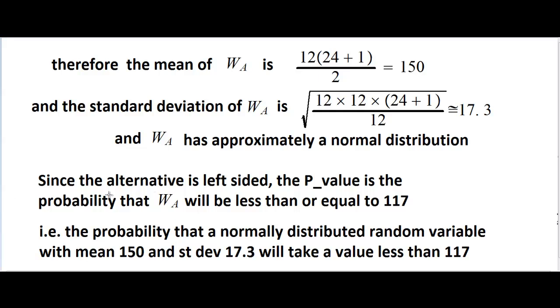Our alternative here was that the values in A will be lower than the values in B, and we are assuming identical distributions for both. The alternative here is left-sided, that is less than, and the p-value will be the probability that W_A is less than or equal to 117. And we will just go ahead and compute the probability that a normally distributed random variable with mean 150 and standard deviation 17.3 will take on a value less than 117.